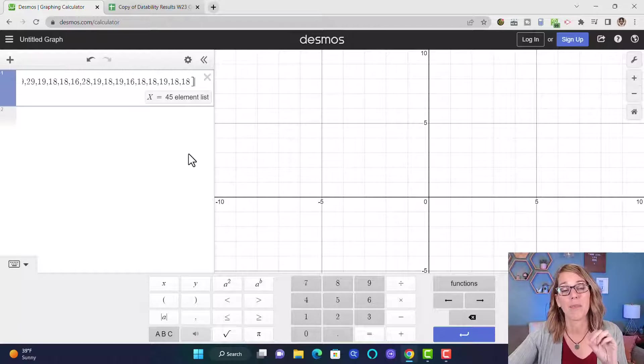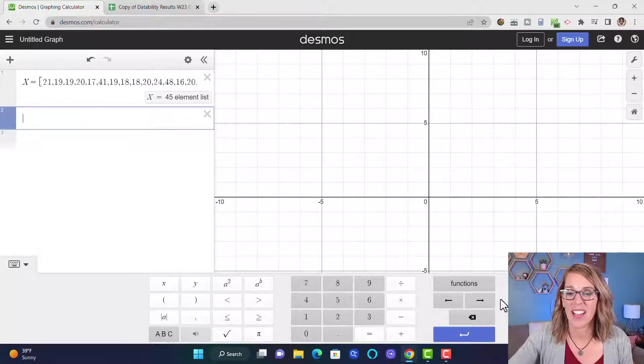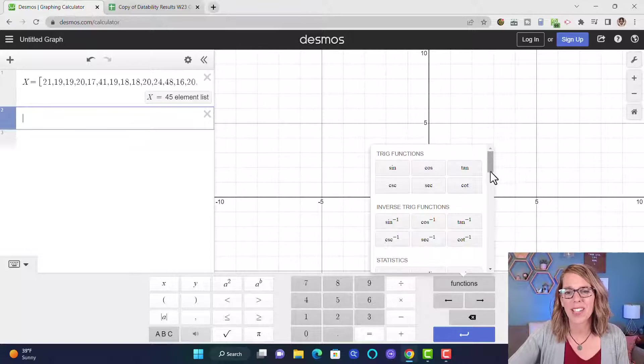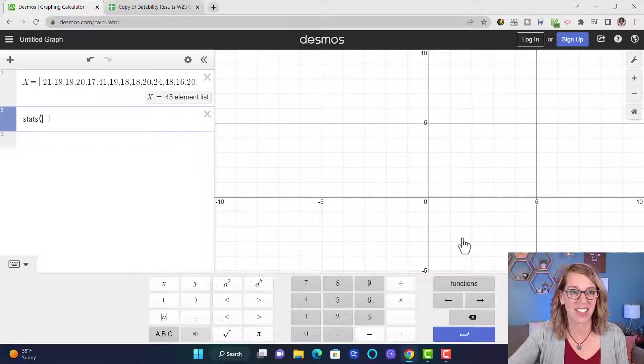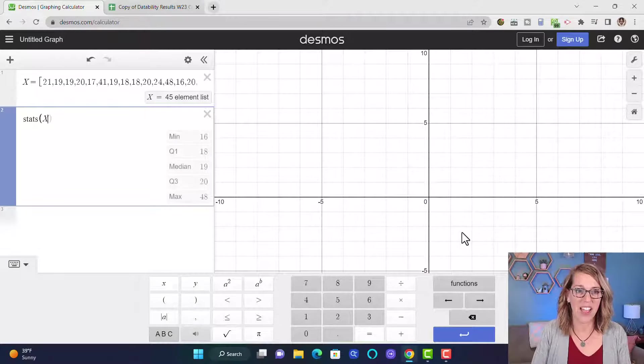That's the one that shows up on a box and whisker plot. Clicking in an empty cell I can go over here to functions. I'm looking for stats, so Desmos just calls this stats, and then I can type in X and I've got my five number summary.